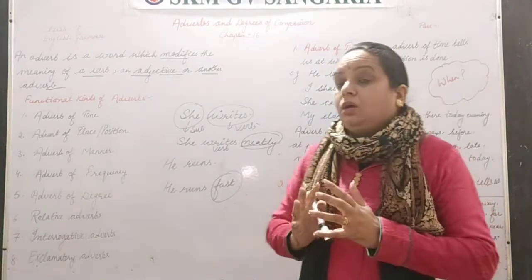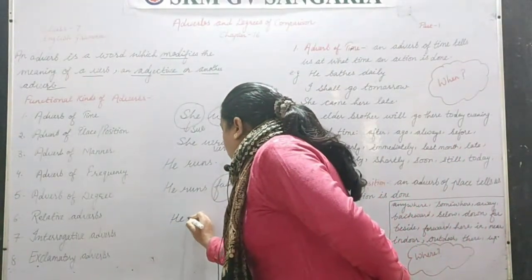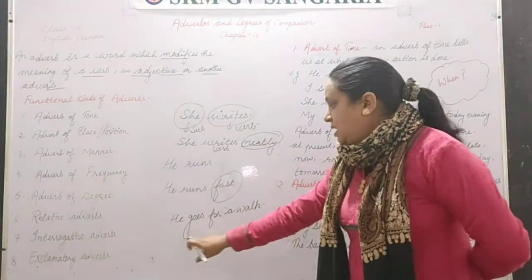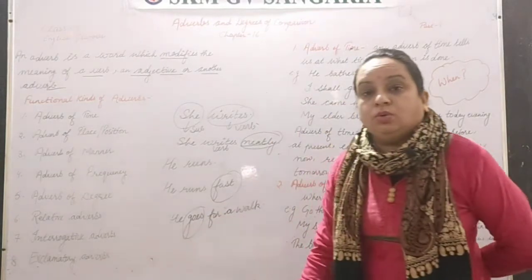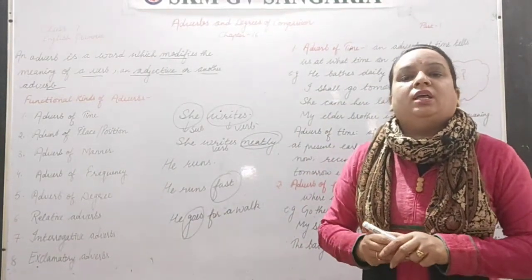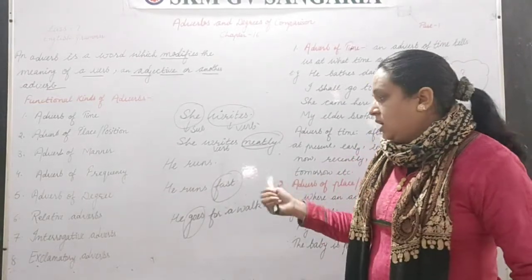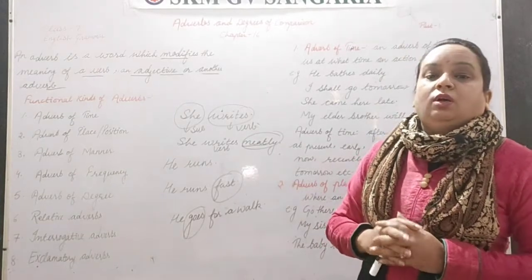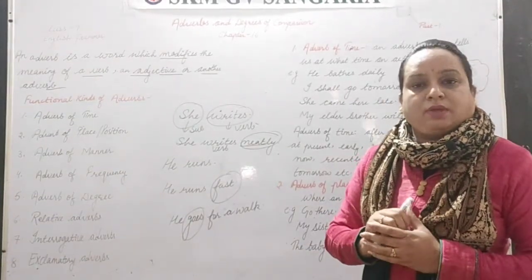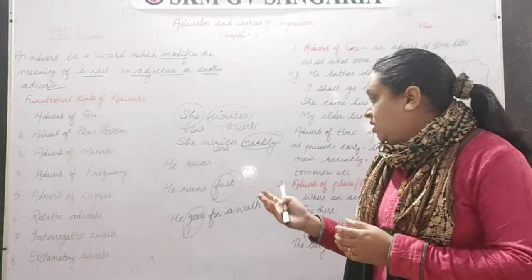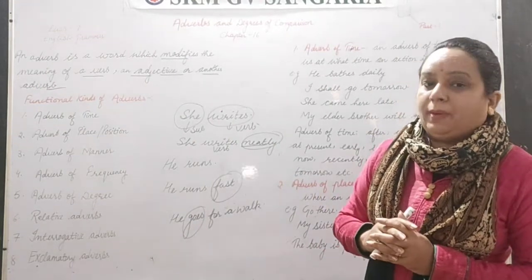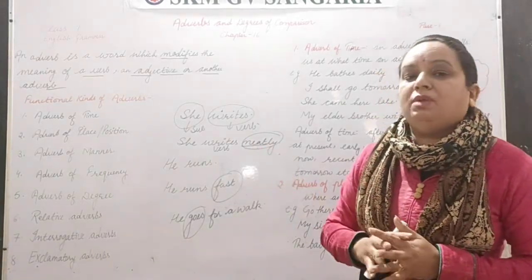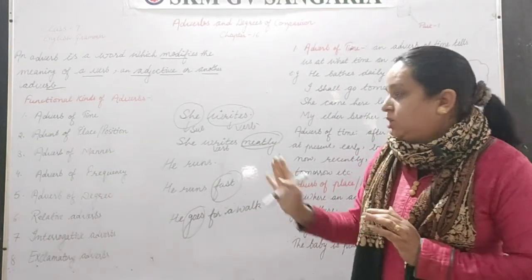Now consider the sentence 'He goes for a walk.' Here 'goes' is the verb, but it does not say where he goes, when he goes, or how he goes. If we add 'he goes for a walk daily,' then 'daily' tells when. 'He goes for a walk in the park' tells where. These words — 'in the park,' 'daily' — add meaning to the verb and are known as adverbs.